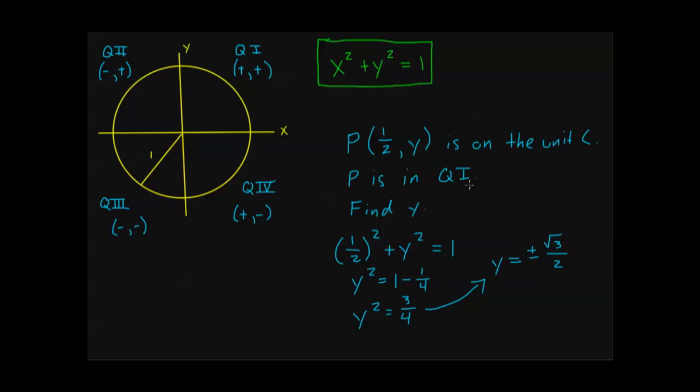This is where I need that additional piece of information. I have this plus or minus, and I need to know what it is. This part right here, p is in quadrant one, that gives me the information that I need, because I know that y is positive in quadrant one. So that's going to give me that y is positive square root of three over two.